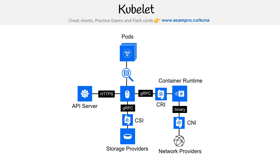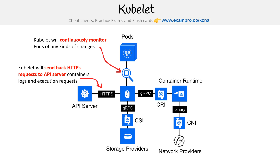Here's gRPC shown in a few different places to indicate where that communication is happening. For pods, kubelet will continuously monitor pods for any kind of changes — that's how we know something has happened in the pods. Kubelet will send back HTTPS requests to the API server. For container logs and execution requests, the logging information from your pods is something kubelet sends along.